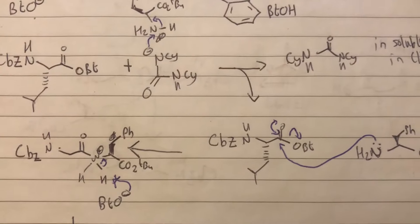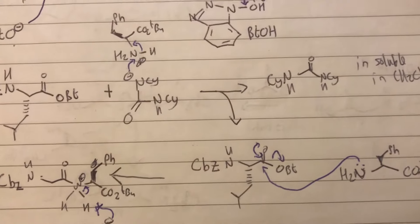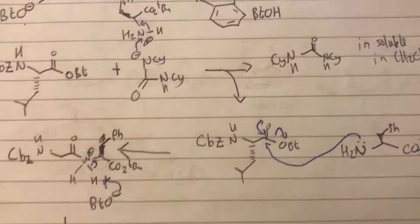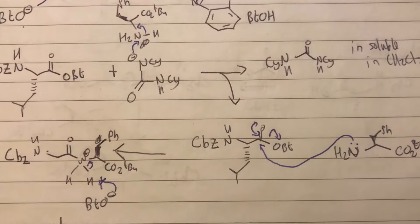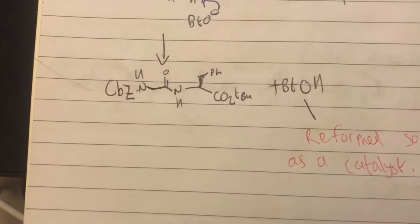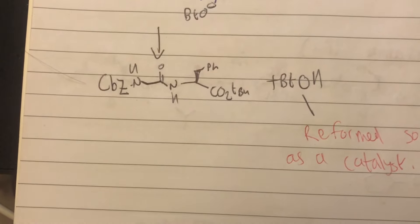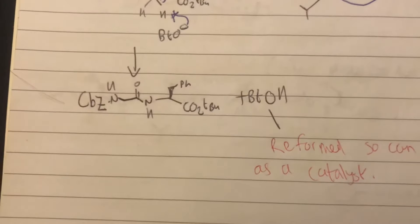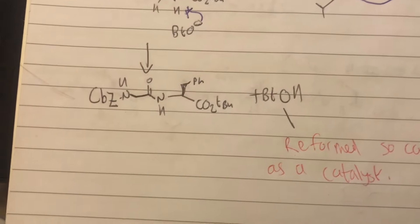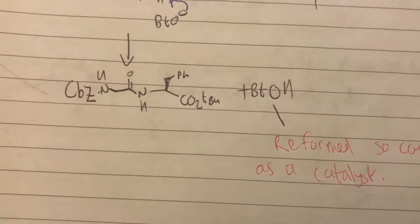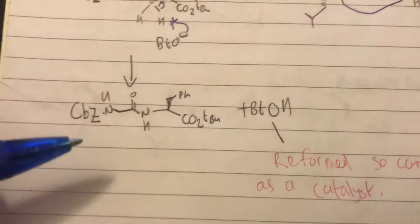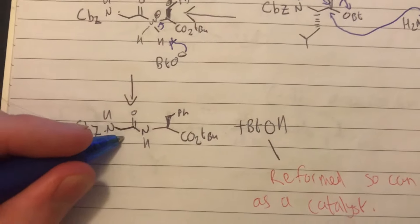This then forms our almost peptide bond. We've got everything involved there apart from we have now an N plus because it's four-coordinate. We can use our BTO minus which we formed earlier as well to deprotonate our nitrogen, and then finally that's our product. We finally form the peptide bond. Obviously we can use different amino acids and different starting material as well.